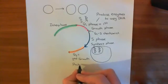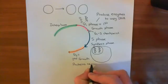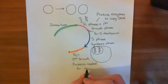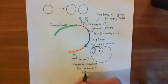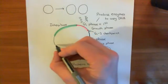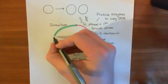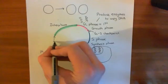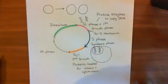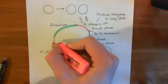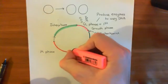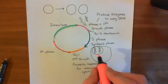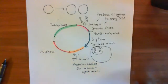So in G2 you produce proteins needed for mitosis and cytokinesis. Then comes the M phase — the mitosis phase. First, you have mitosis, where you actually split the nucleus into two; half the copied genetic material goes into one nucleus and the other half into the second nucleus.